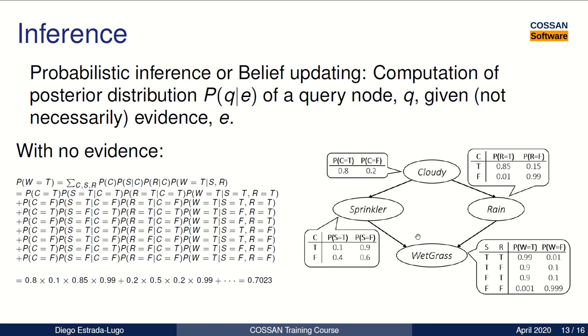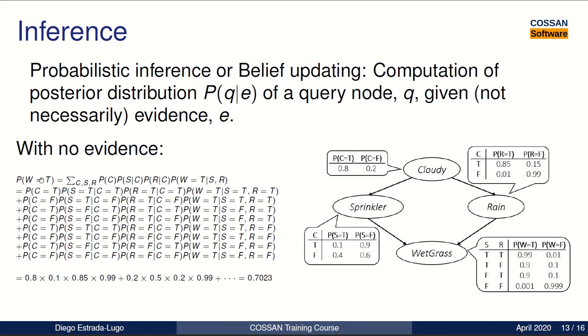So in order to do this diagnostic or prognostics, we need to carry out a probabilistic inference or belief updating, which is the computation of a posterior distribution of a query node, given evidence, but not always, as we can see in this example. From our example network, we want to compute the posterior probability of the grass being wet. This means wet grass being true. So we first have to define our joint probability distribution, which is given as the product of each of the nodes in the network.